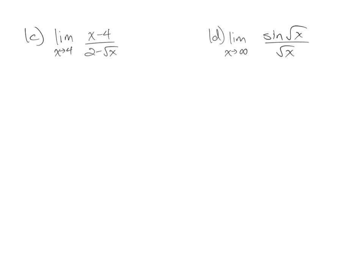On this page we have the limit as x approaches 4 of x minus 4 over 2 minus the square root of x. If you have a real number and not an infinity, you can go ahead and substitute it in to see what happens. That gives you 4 minus 4 over 2 minus the square root of 4, which in the denominator is really 2 minus 2. So this leaves you with 0 over 0, and that is your hint that the expression can be simplified somehow in order to make possible a substitution of 4 for x.